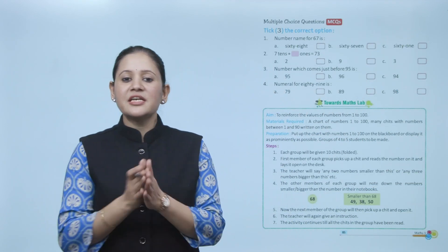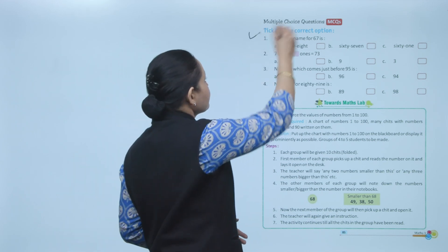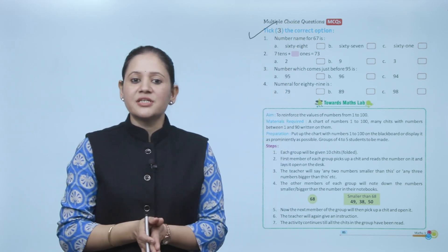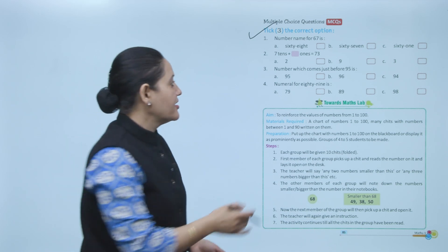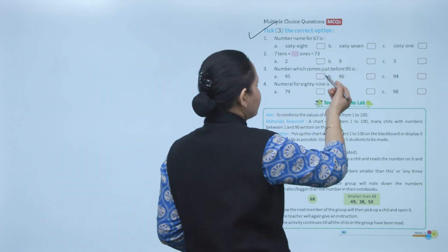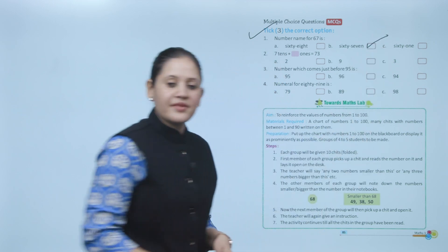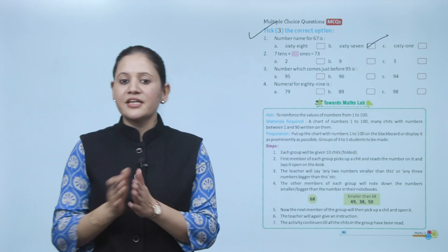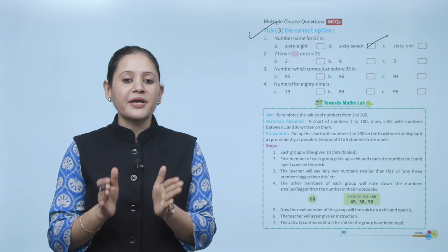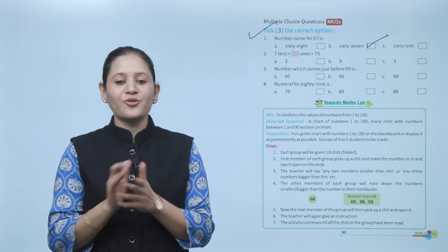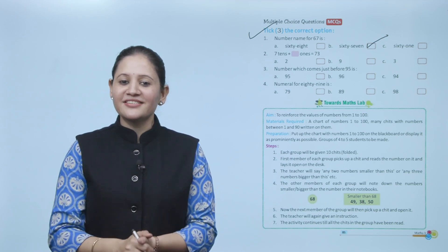Next, multiple choice question: select the correct number name for 67. S-I-X-T-Y-S-E-V-E-N — that is the correct number name, so we will select option B. Here we end the chapter. You have to practice all the questions. I hope you understood it well — now go and practice.